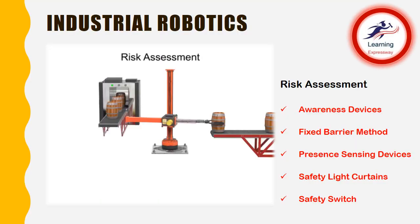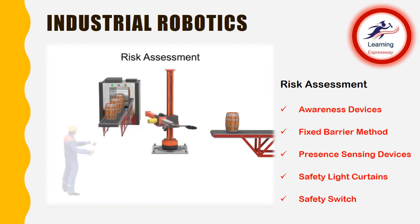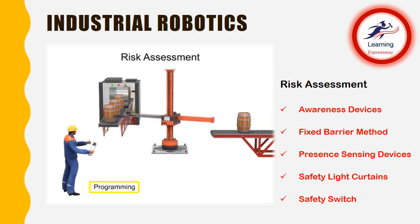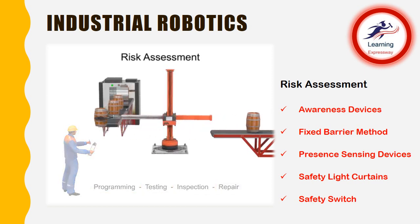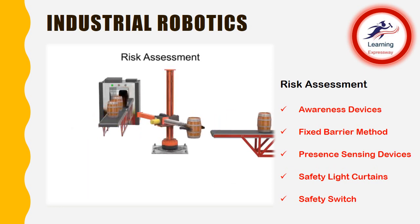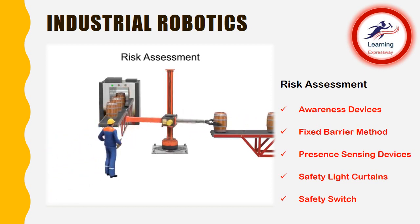The first step in the design process for any robot is a risk assessment of its potential hazards. Studies have shown that most injuries occur not during normal operation, but during times when human interaction is most prevalent: programming, testing, inspection, and repair. By system design, robots rarely need human interaction during normal use, but when programming, testing, inspection, or repair is required, humans are more likely to be in the robot's work area or work envelope.